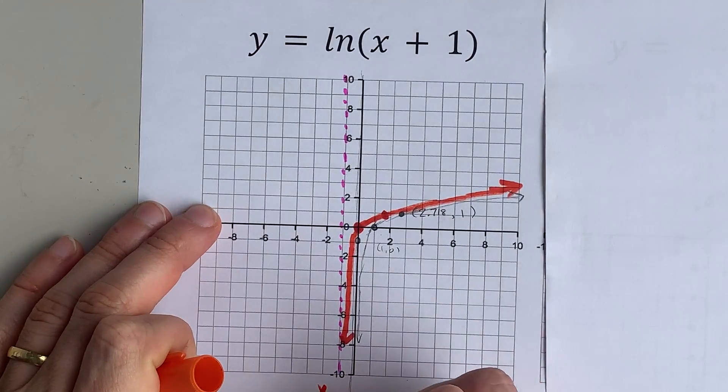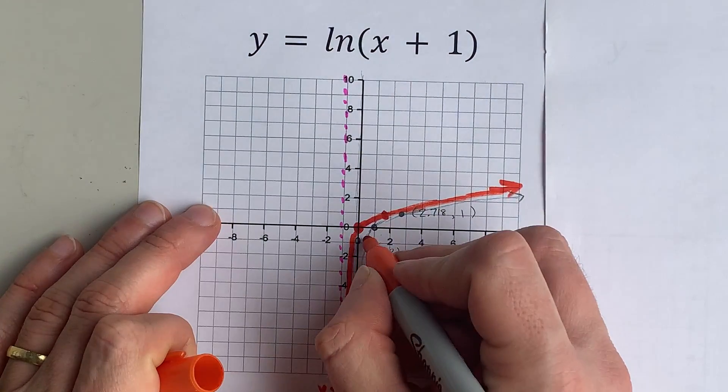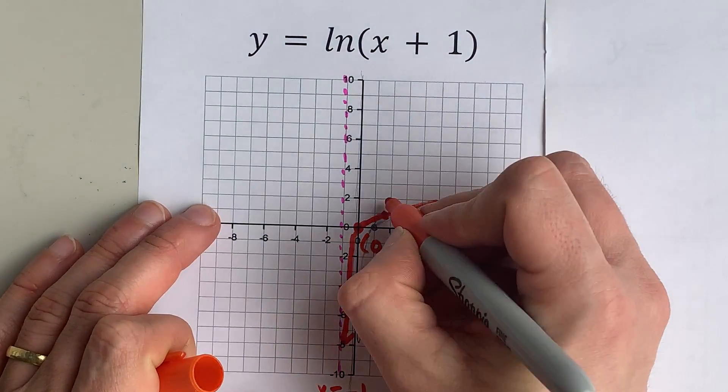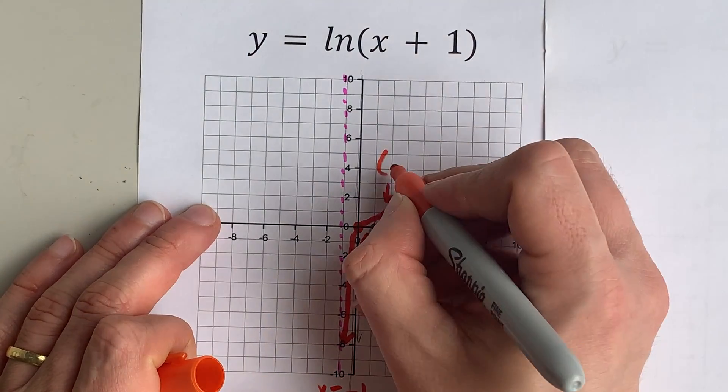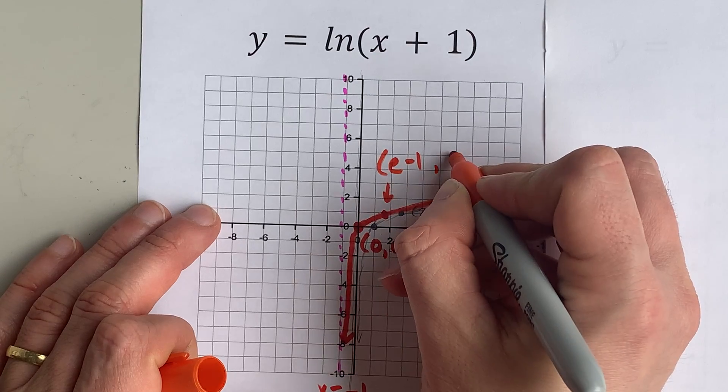Again, your vertical asymptote is x equals negative 1. You have a point at 0, 0, and another point at 1.71, or e minus 1, comma 1.